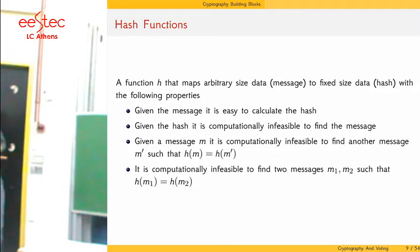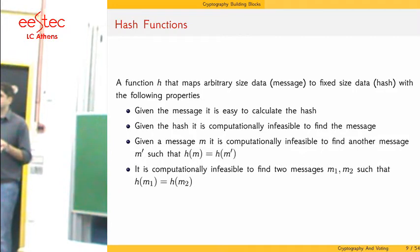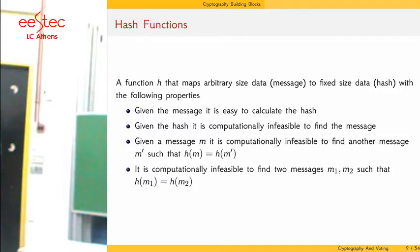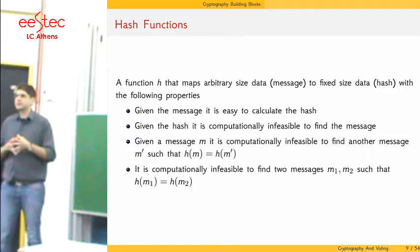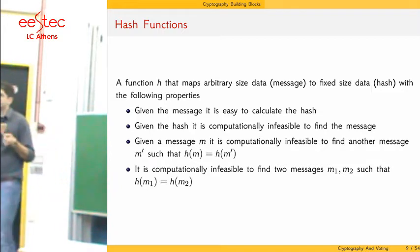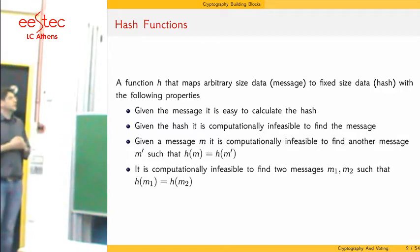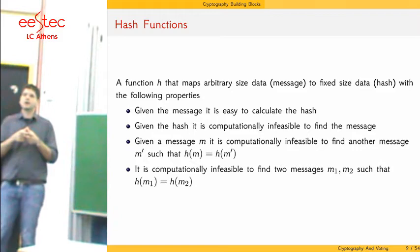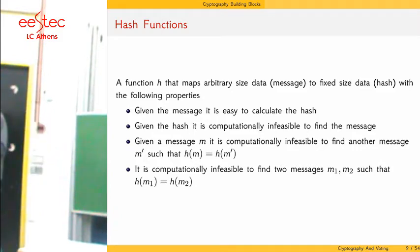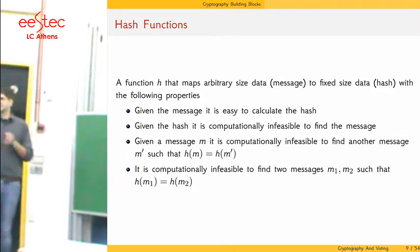One of the most important cryptographic tools is hash functions. Hash functions take arbitrary-size data and compact it to fixed-size data, but with important properties: given the message it is very easy to calculate the hash, but we cannot go backwards — given the hash it must be computationally infeasible to find the message. It must also be computationally infeasible to find another message such that two hashes collide, and for any random messages you cannot find two that have the same hash.